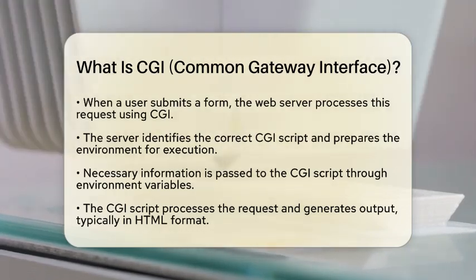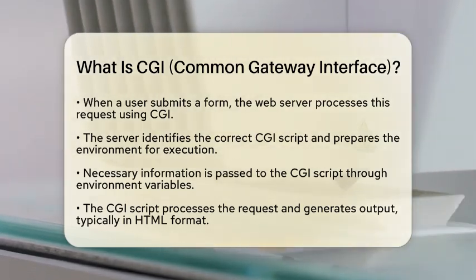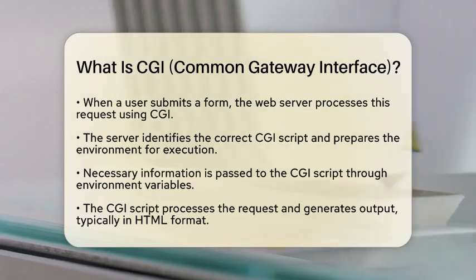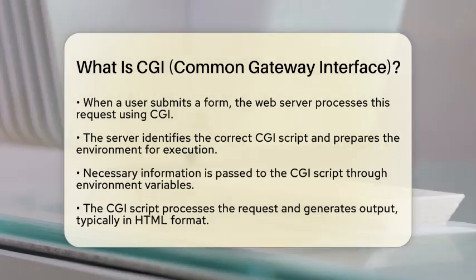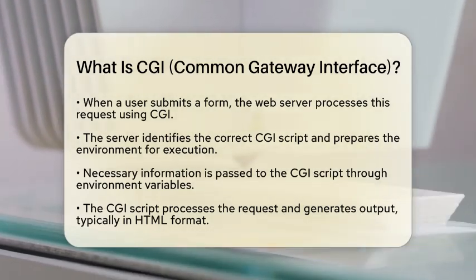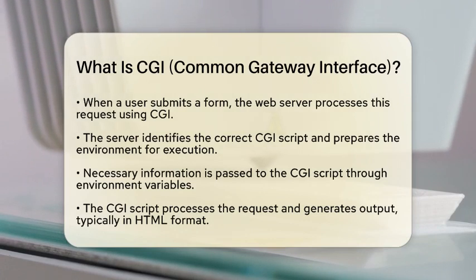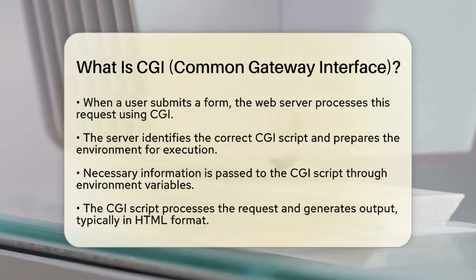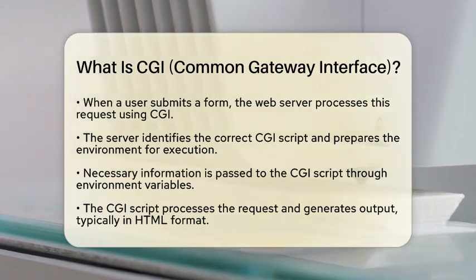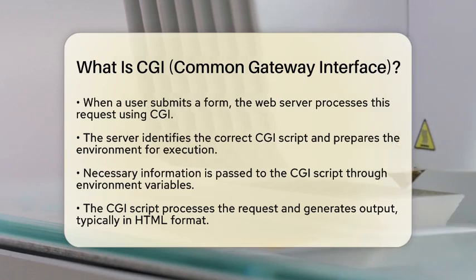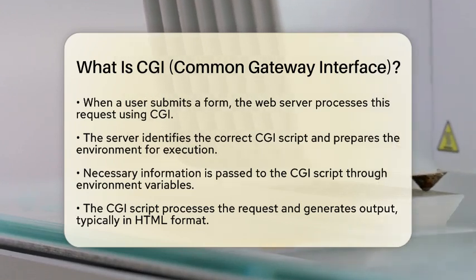After that, the CGI script runs, processes the request, and generates output, usually in HTML format. Finally, the server packages this output as an HTTP response and sends it back to the user's browser.